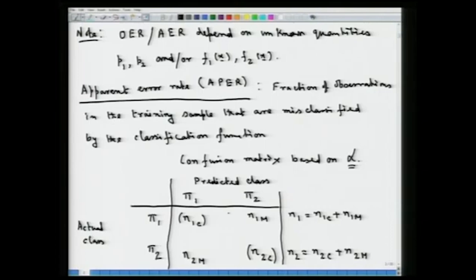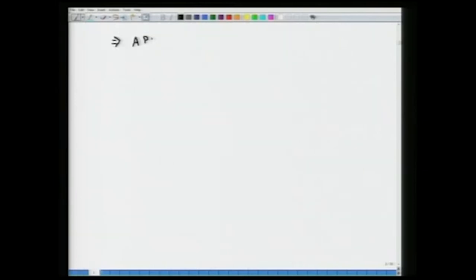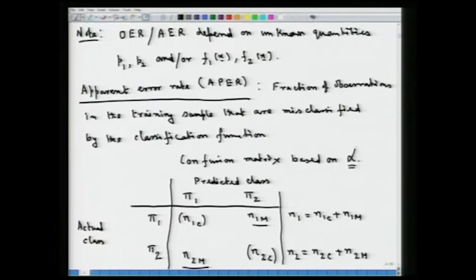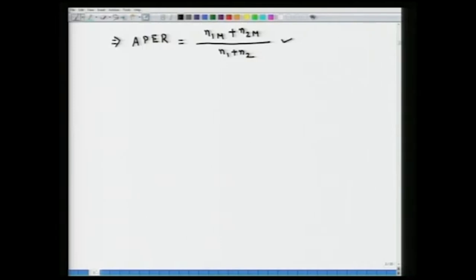Given this confusion matrix derived from a particular classification function, n1m are misclassified observations from the first population and n2m are misclassified from the second population. The apparent error rate (APER) is thus the fraction of misclassified observations: APER = (n1m + n2m) / (n1 + n2). This is in a perfectly implementable form — based on any classification function and the given learning sample L, one can compute the confusion matrix and hence obtain the apparent error rate for any practical data.